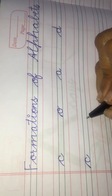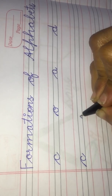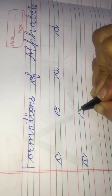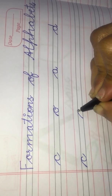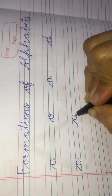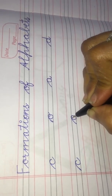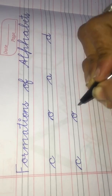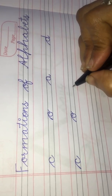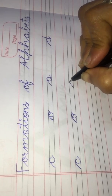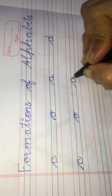Now letter O. Start from the third line, go up, slant line, come down, make a loop like this. Now make letter A like this.